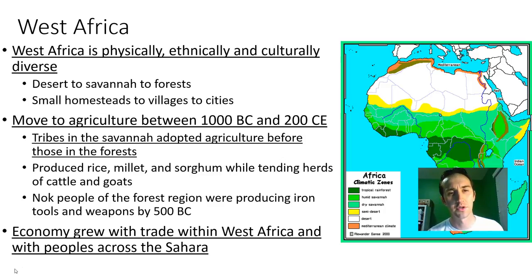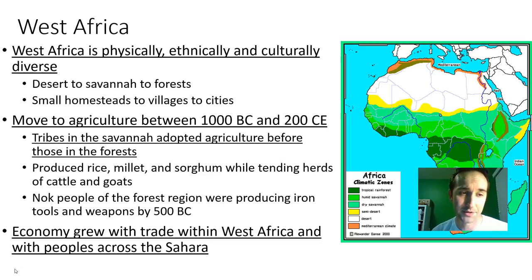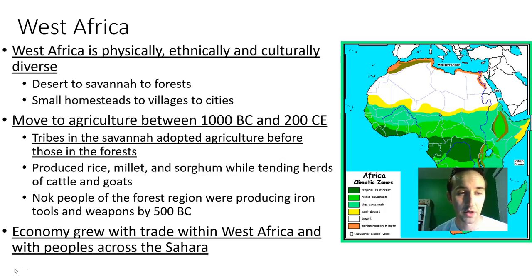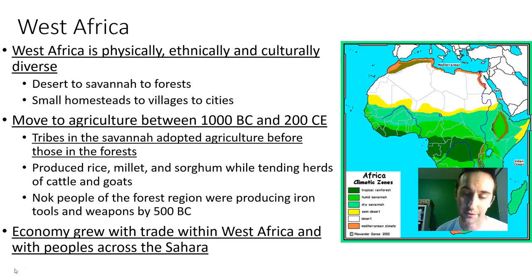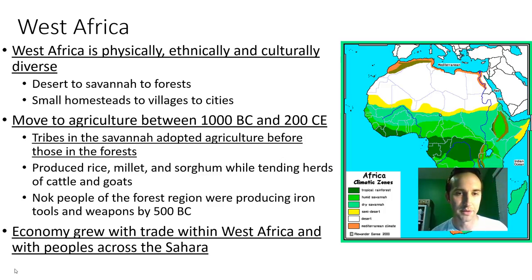We see the move to agriculture right around the year 1000 BC to 200 CE depending on the region. Tribes in the savannah are going to adopt agriculture a lot faster than those in the forests, because in the savannah all they have to do is really clear out an area of grass and then plant. In the forest they're going to have to chop down an entire forest to set up a farm, so it takes them a bit longer to develop into massive agricultural civilizations.